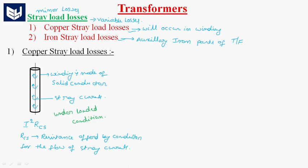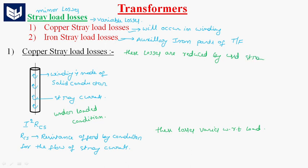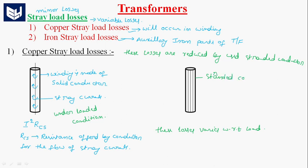These losses are reduced by using stranded conductor. Stranded conductor means the conductor is cut into a number of slices and are twisted, separated with enamel coating. This is called stranded conductor.